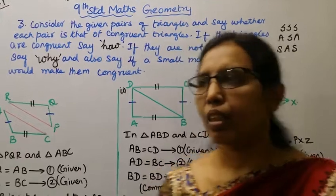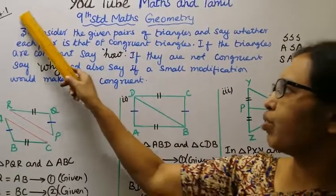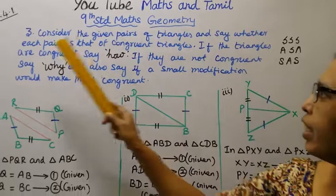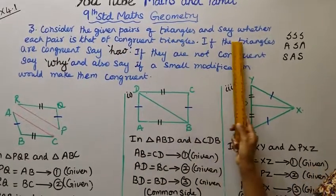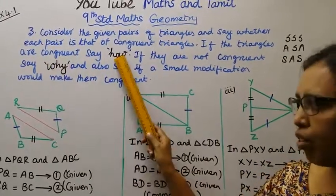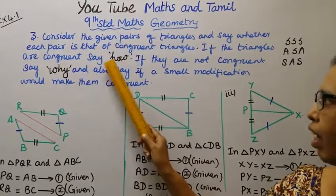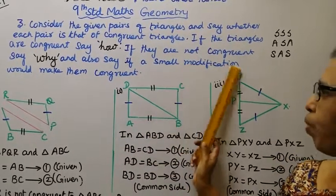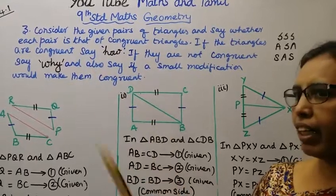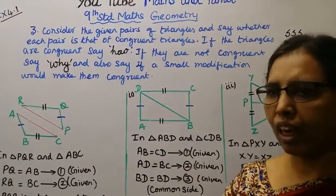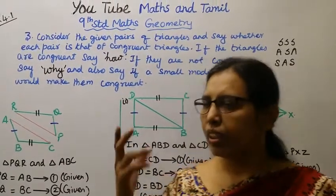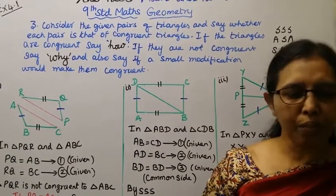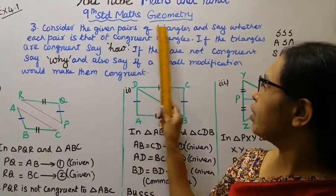Hello students, welcome to Max and Tumble channel. This is standard 9 Max Geometry, Exercise 4.1, third sum. Consider the given parts of triangles and say whether each pair is that of congruent triangles. If the triangles are congruent, say how they are congruent. If they are not congruent, say why, and also say if a small modification would make them congruent.